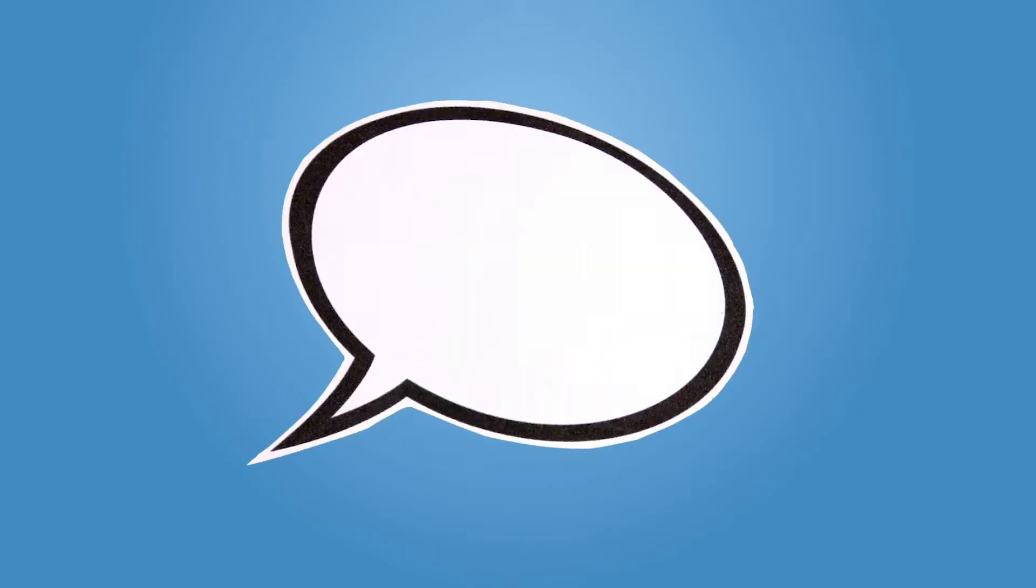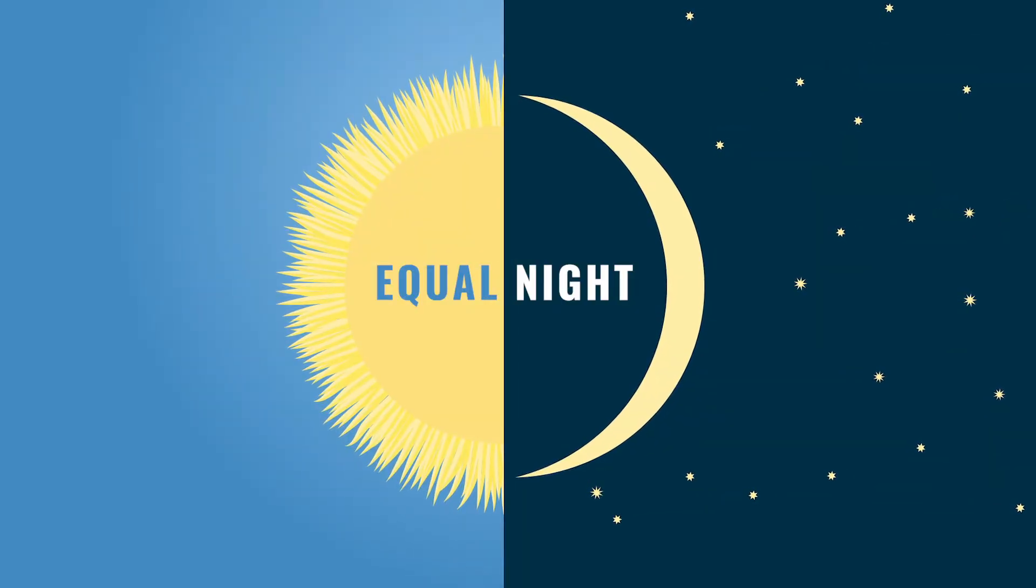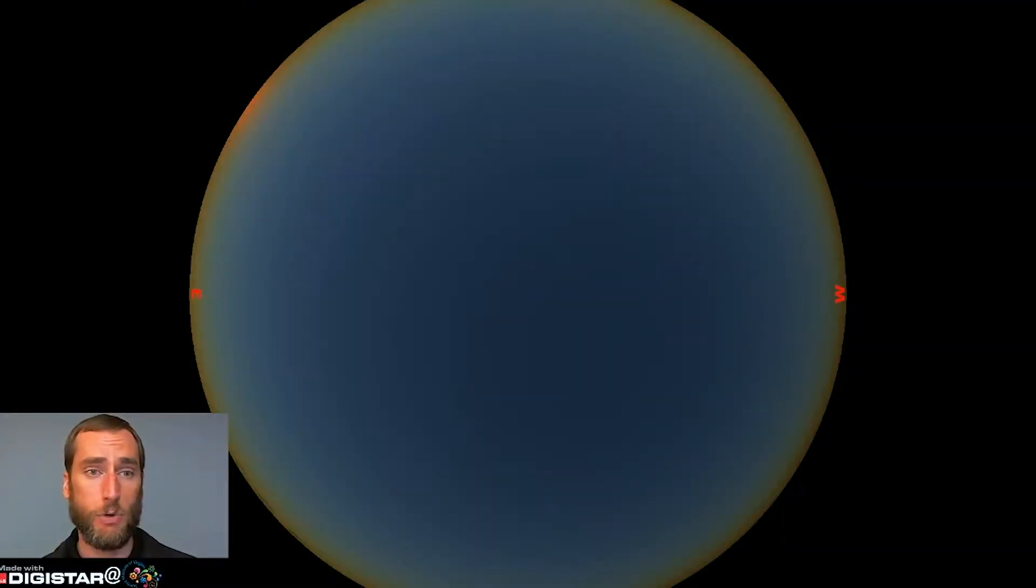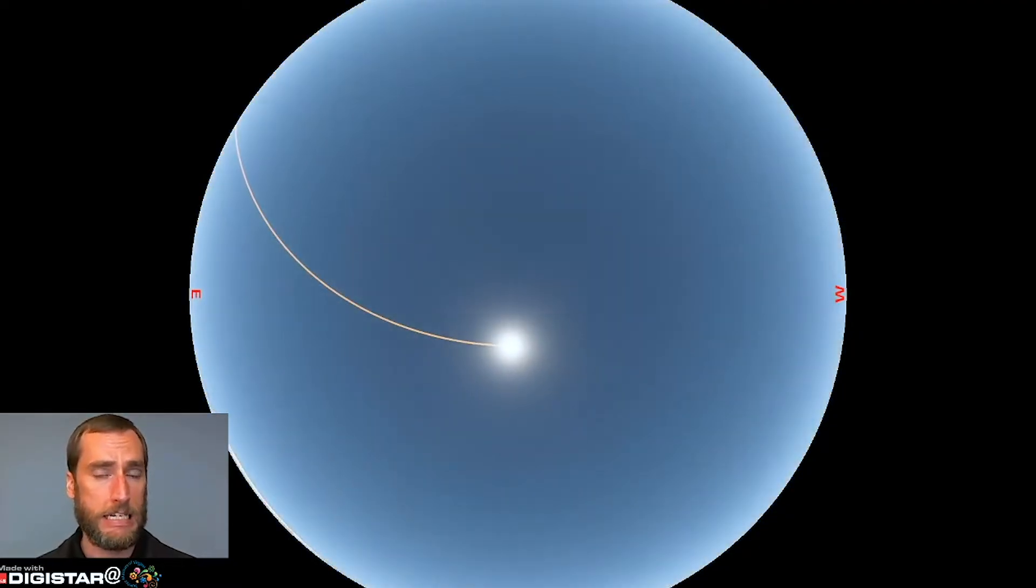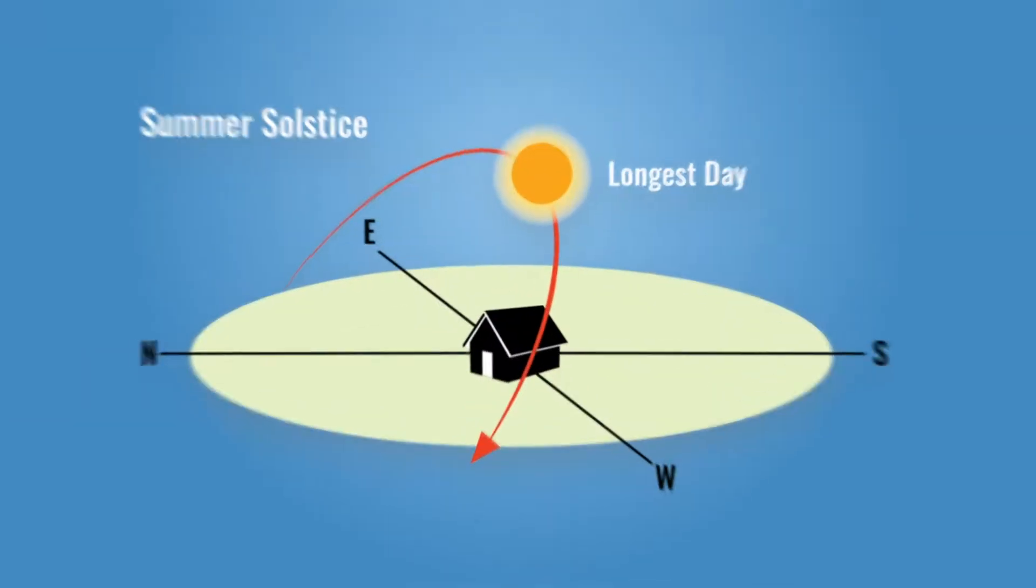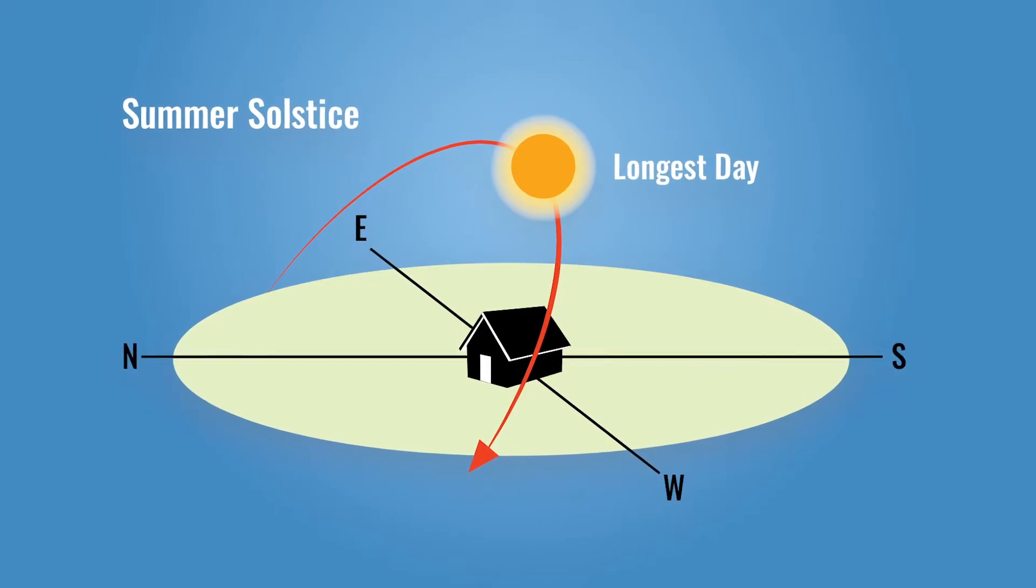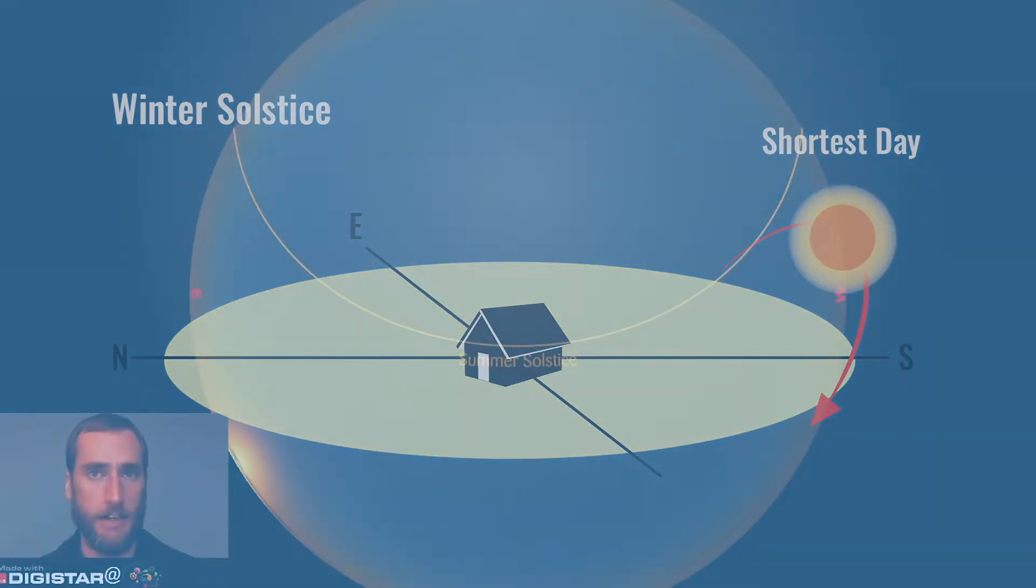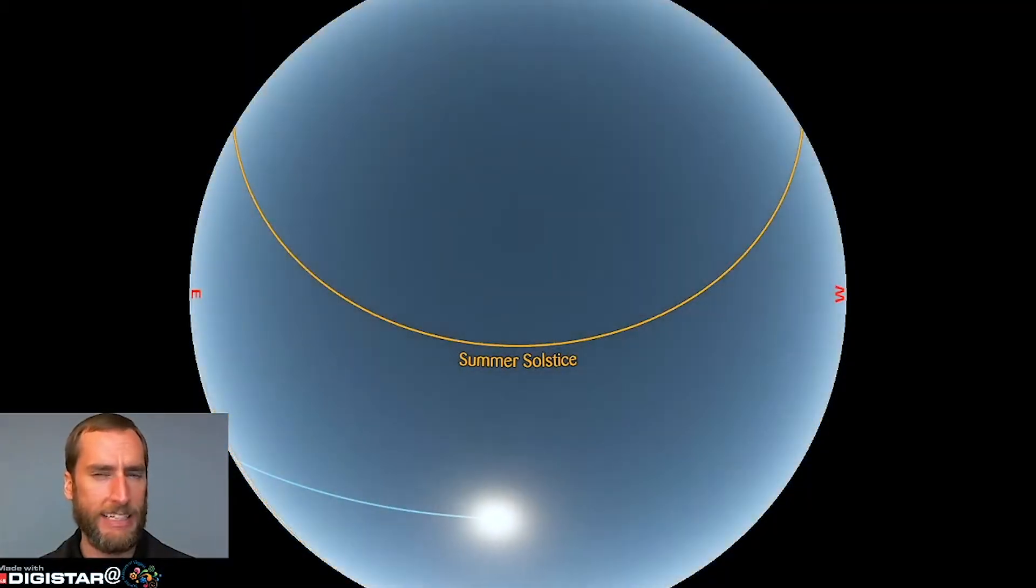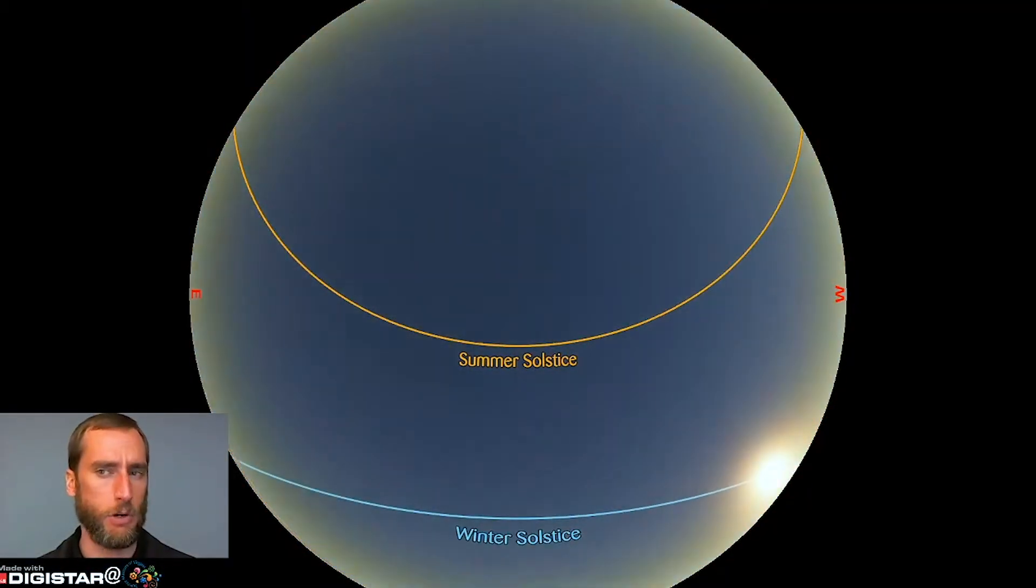Let's start with the word equinox. That comes from a Latin term meaning equal night. Simply put, it's a day halfway between the summer solstice, the day of the year when the sun climbs highest in the sky at midday and is in the sky for its longest period of time, and the winter solstice when the sun is low in the sky at midday and is above the horizon for a relatively short amount of time.